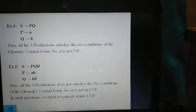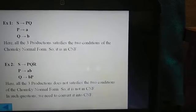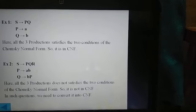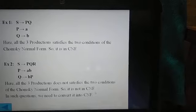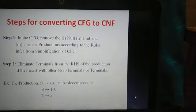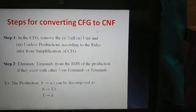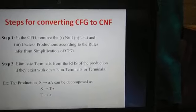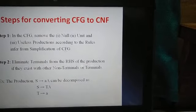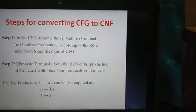In the second example, we have: S produces PQR, P produces 'ab', and Q produces 'bP'. These productions do not satisfy either of the two CNF conditions — S → PQR has three variables on the right-hand side, and others have mixed symbols — so this grammar is not in Chomsky Normal Form. In such cases, we need to convert the grammar into CNF. The steps begin with Step 1: remove null, unit, and useless productions according to rules from simplification of context-free grammars.